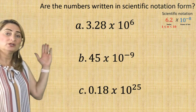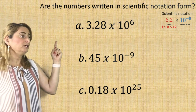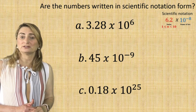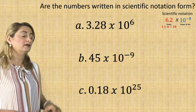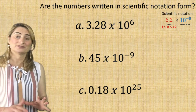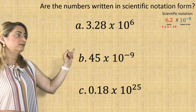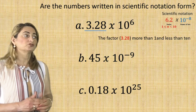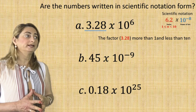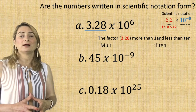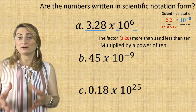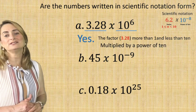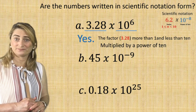Look at the first example: 3.28 times 10 to the power of 6. The first thing to look at is the factor. The factor is 3.28, which is more than 1 and less than 10, multiplied by a power of 10. So yes, it is written in scientific notation.